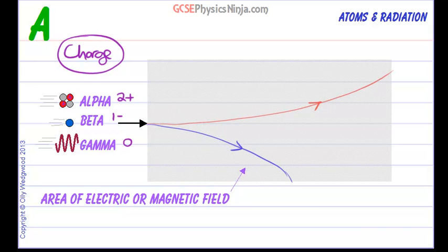And the gamma wave is neutral so let's put that in and that is going to go straight through without being deflected. Let's see if I can draw a straight line on here.